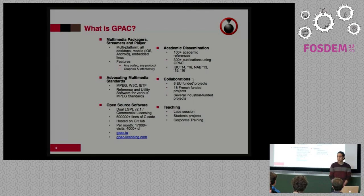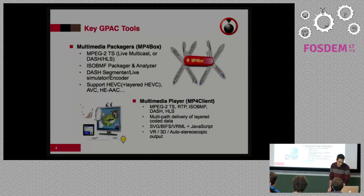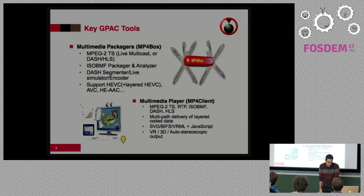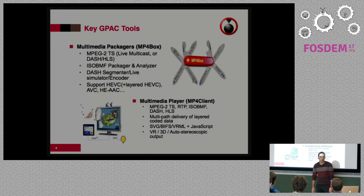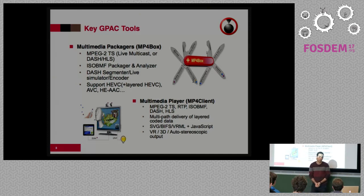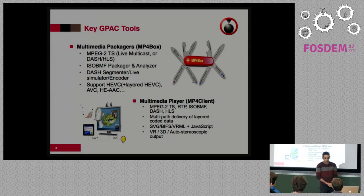So what do we have in GPAC? There are basically two sets of tools. One tool which you may know — MP4Box — which we are happy to call a worldwide reference for MP4 file manipulation. It does MPEG-DASH generation for MP4 files, but not only. We can do encryption of your files, concatenation, segmentation. We can also add streams, remove streams, add items, remove items, and things like that.